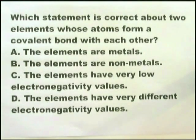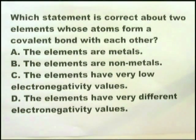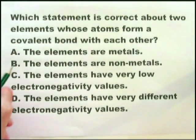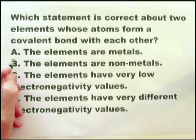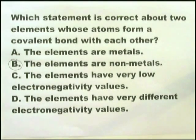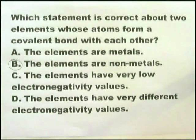Another question about covalent bonds. You simply have to know that two elements that form a covalent bond are in most cases non-metals. And immediately you can identify which statement is correct — it must be that the elements are non-metals. You can check the others.